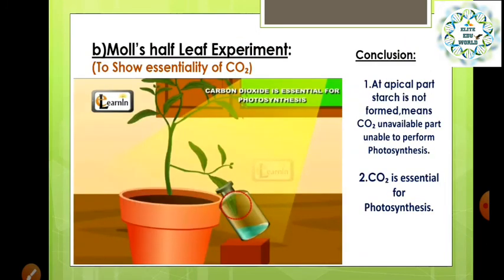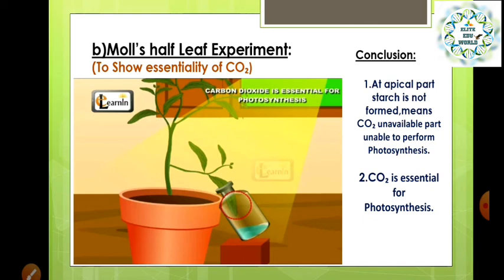The second experiment is Moll's half leaf experiment, and this experiment is to show the essentiality of carbon dioxide. In this experiment, we took a potted plant and one of the leaves is placed in a jar without removing it from the plant. Inside the jar, cotton soaked in KOH (potassium hydroxide) is placed, and that potassium hydroxide reacts with carbon dioxide. The apical part of the leaf is in an atmosphere of potassium hydroxide which reacts with CO2, while the basal part of the leaf is in the open atmosphere containing carbon dioxide. This plant is kept under sunlight for one to two hours, and the leaf is then removed for testing of starch.